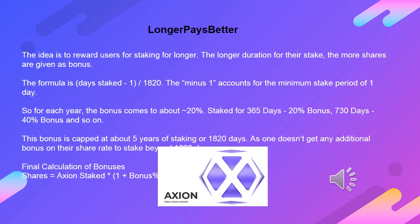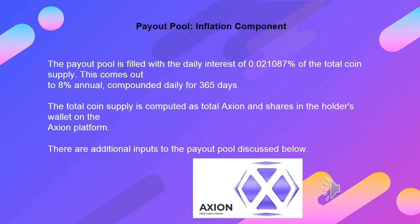Final calculation of bonuses: Shares = Axion staked × (1 + bonus percent from 'longer pays better'). Payout pool — inflation component: The payout pool is filled with the daily interest of 0.021087% of the total coin supply. This comes out to 8% annual, compounded daily for 365 days. The total coin supply is computed as total Axion and shares in the holder's wallet on their Axion platform. There are additional inputs to the payout pool discussed below.